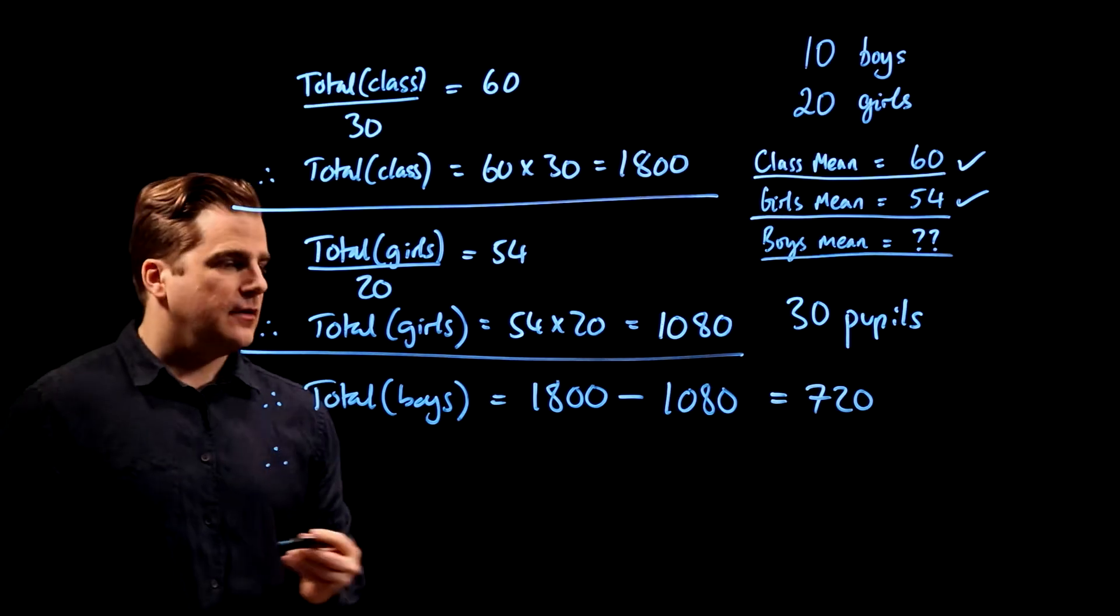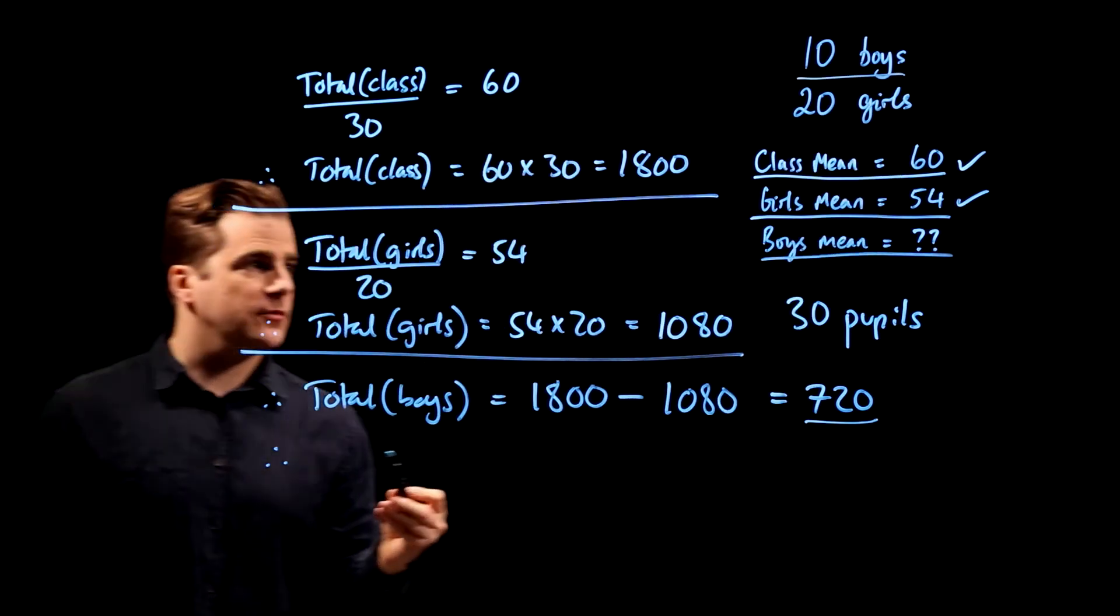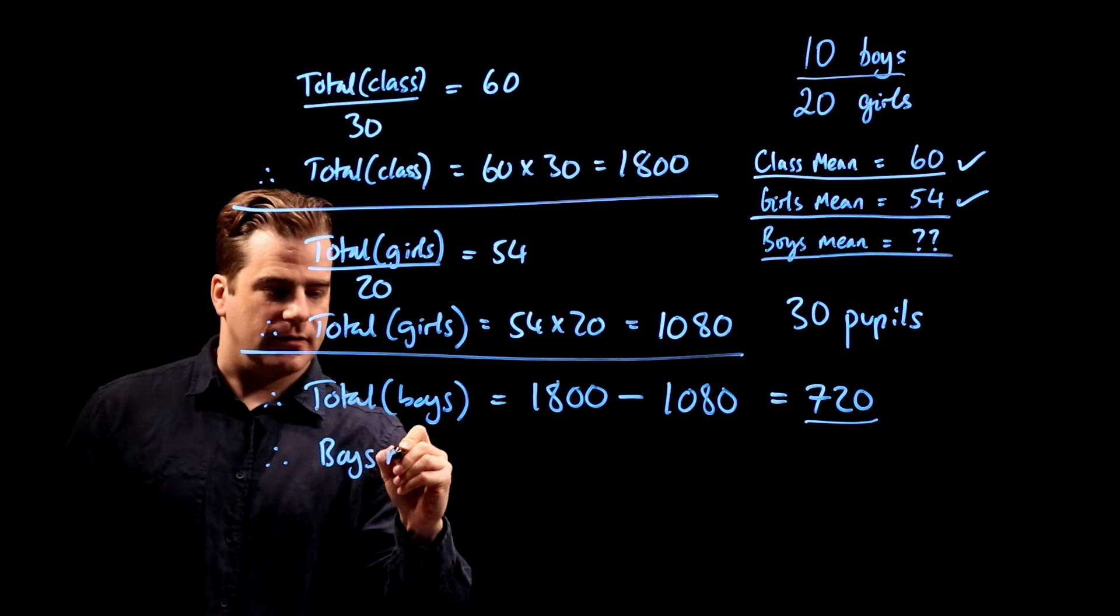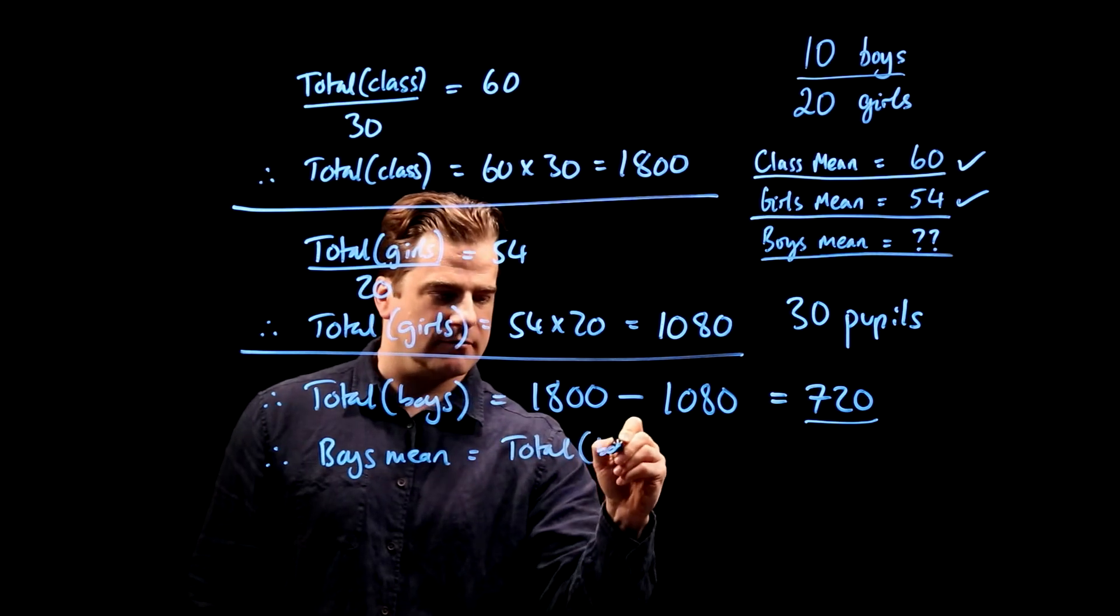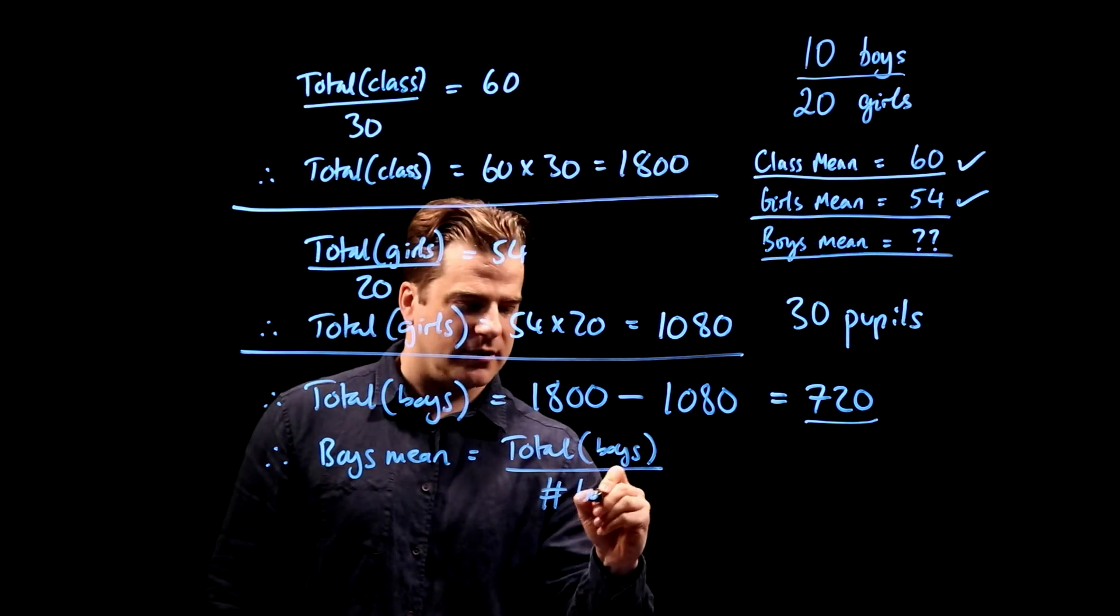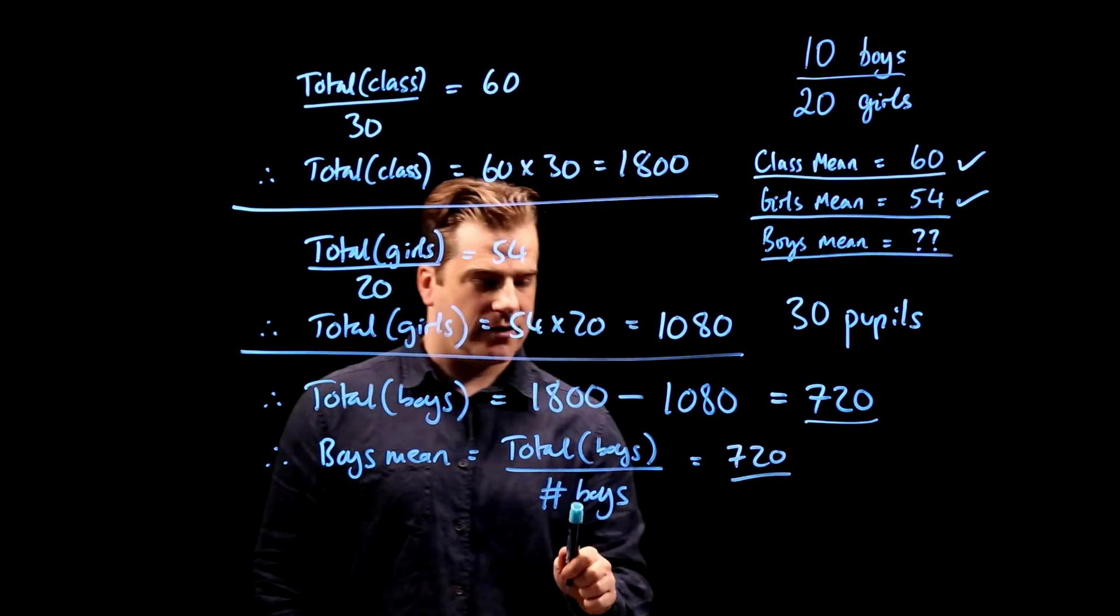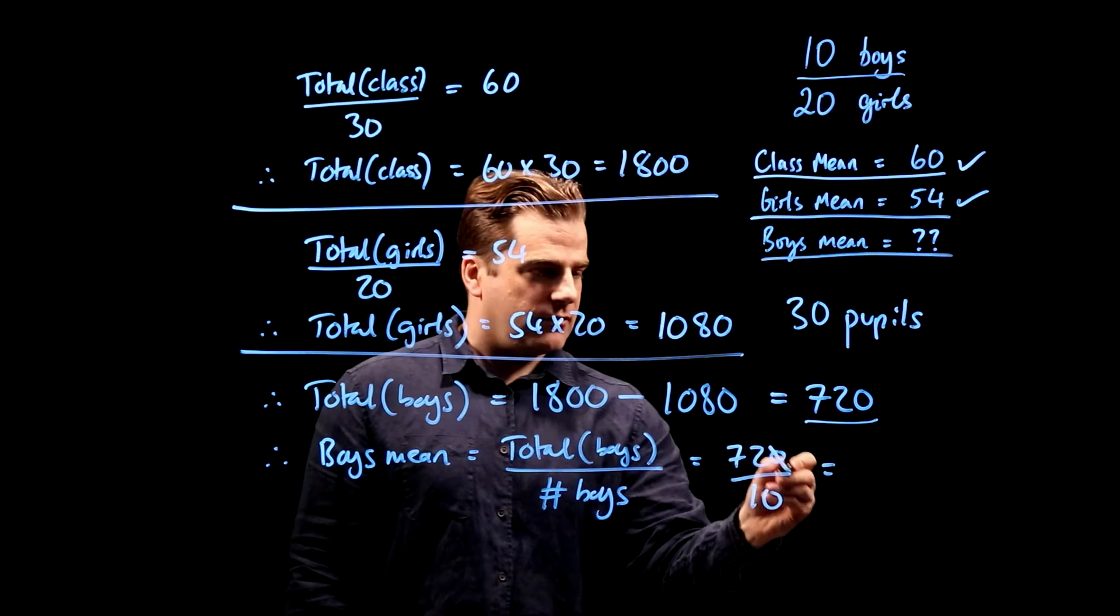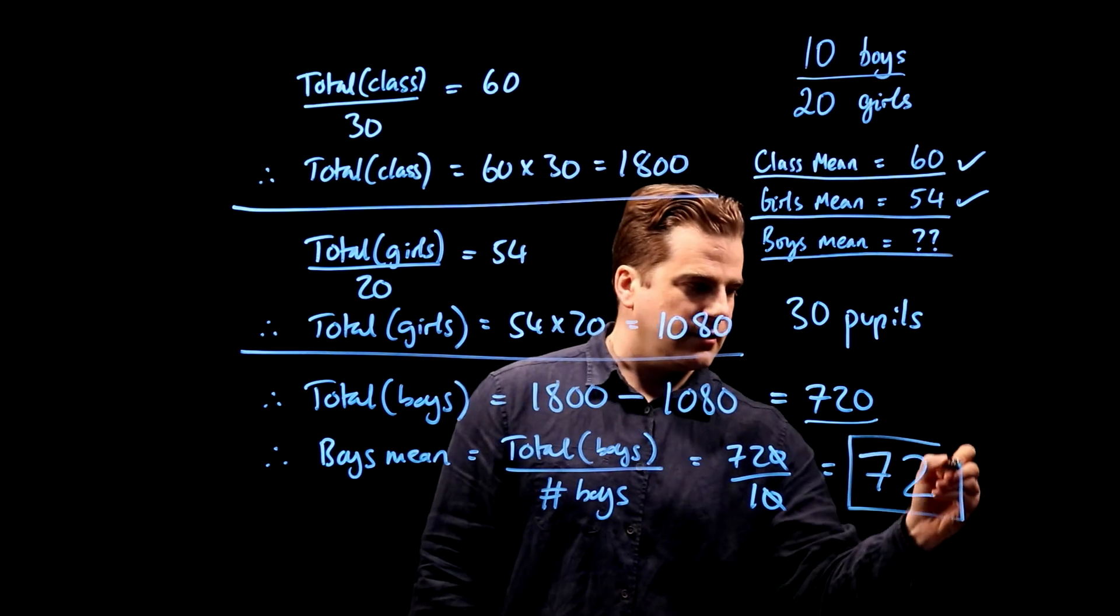So we know the boys' total is 720. We know that there are 10 boys, so we can work out the boys' mean. The boys' mean score equals the total for the boys divided by the number of boys, which is 720 divided by 10. Knock off those zeros - 72. And that's how you do it.